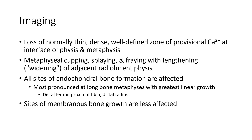Imaging findings: loss of normal well-defined zone of provisional calcification at the interface of physis and metaphysis. Metaphyseal cupping and fraying with lengthening of the adjacent radiolucent physis. All sites of endochondral bone formation are affected. Most pronounced at long bone metaphyses with greatest linear growth: distal femur, proximal tibia, distal radius.